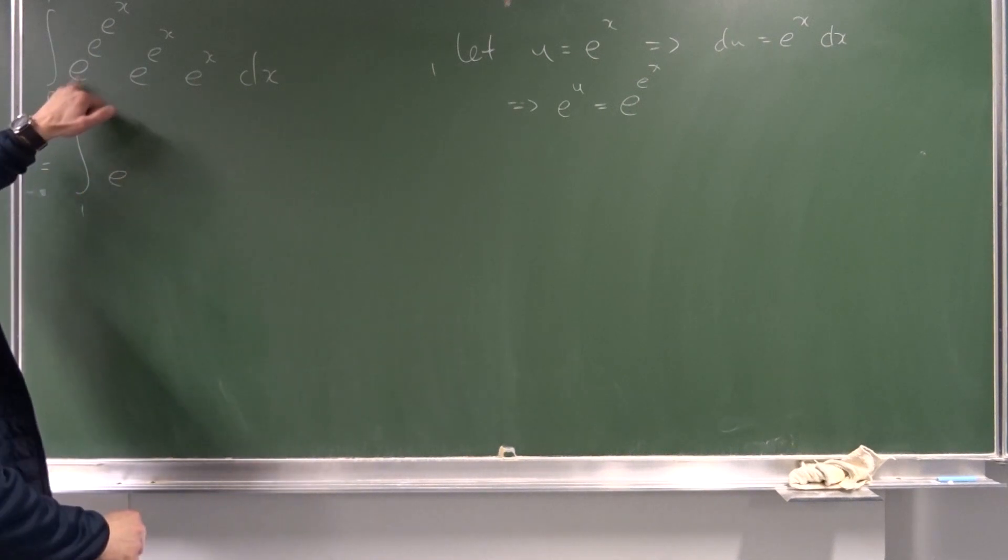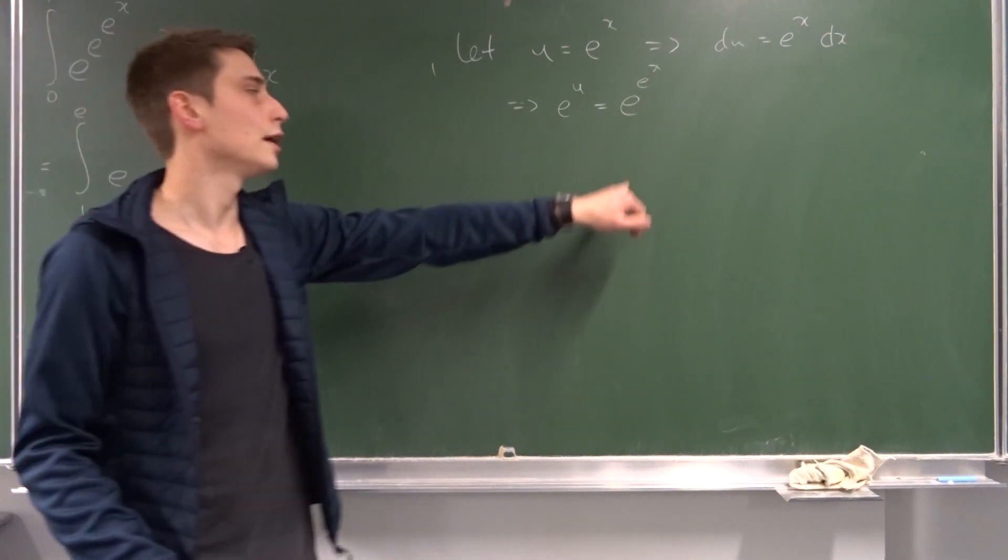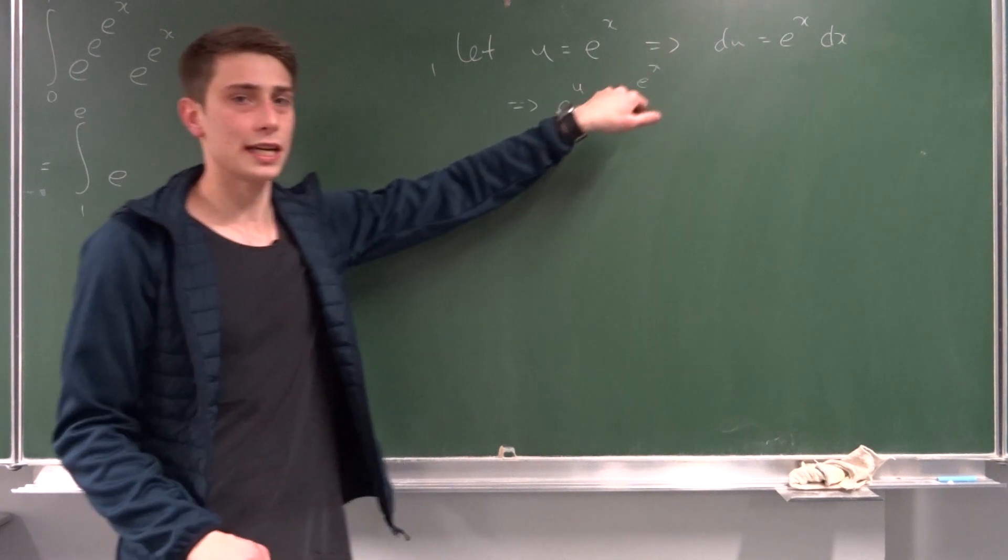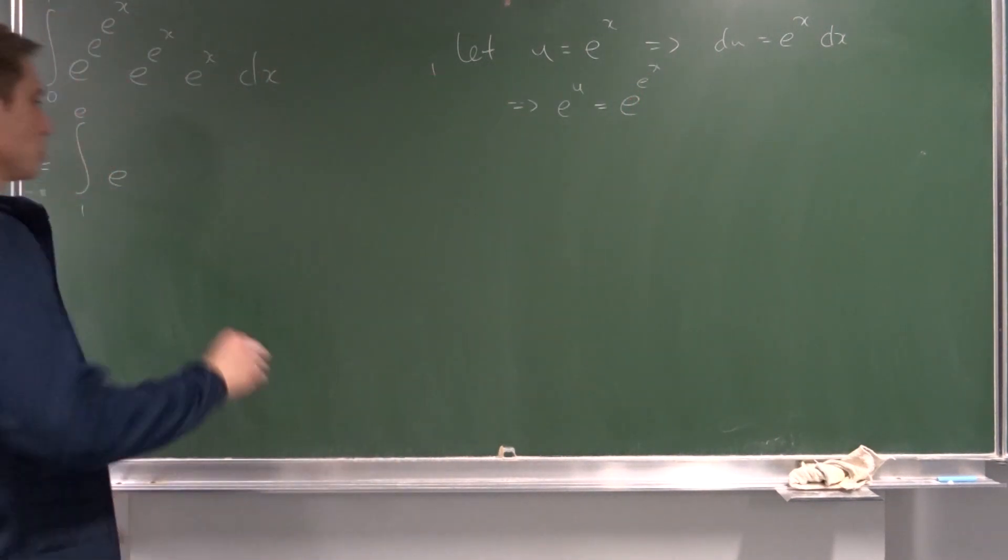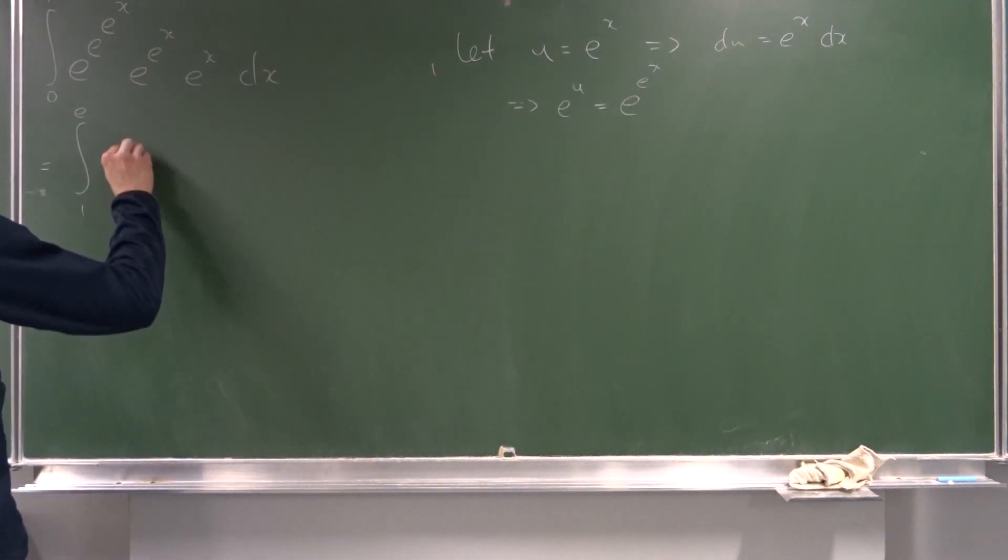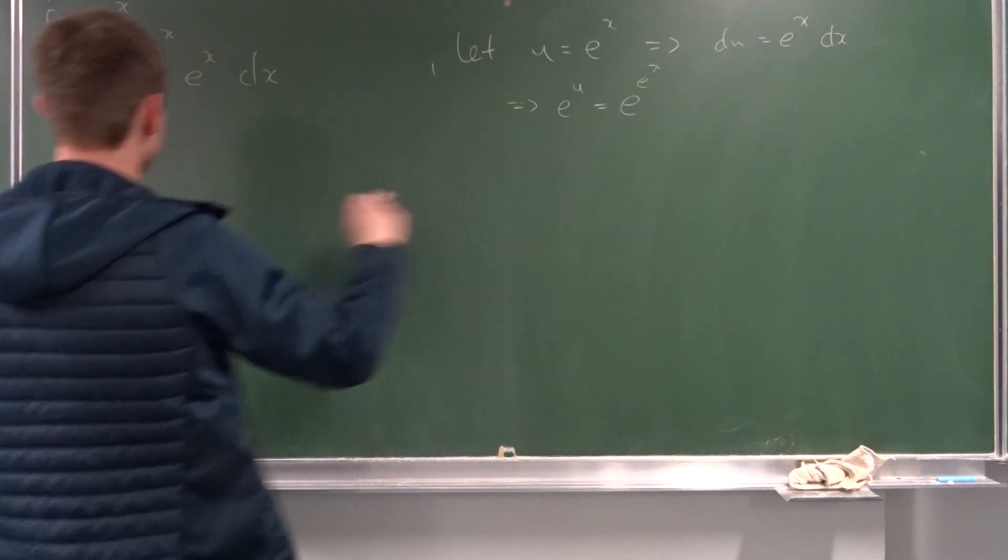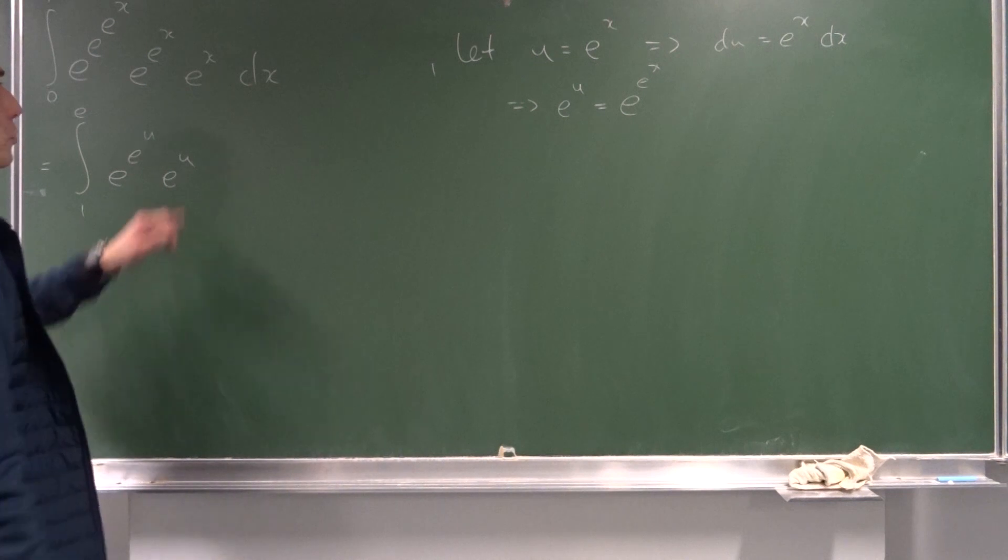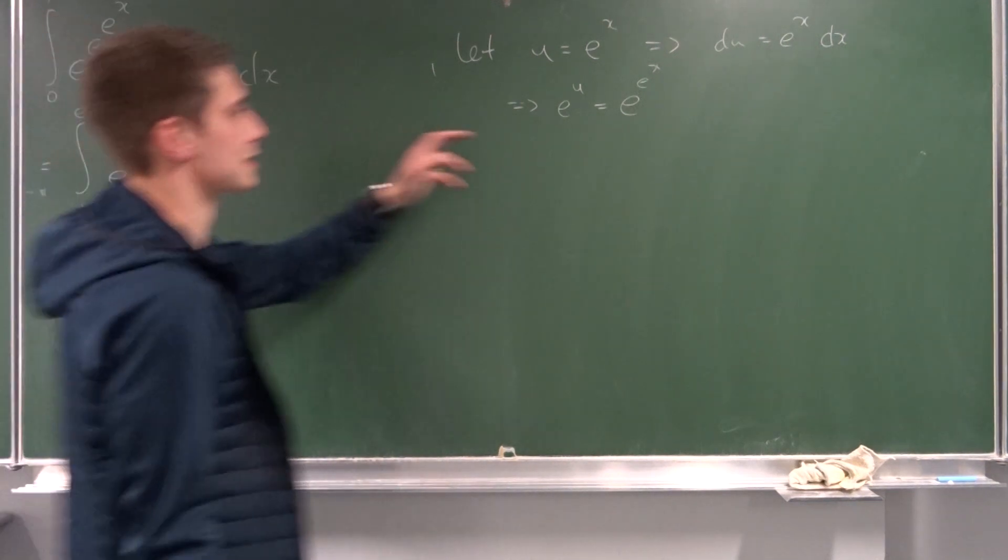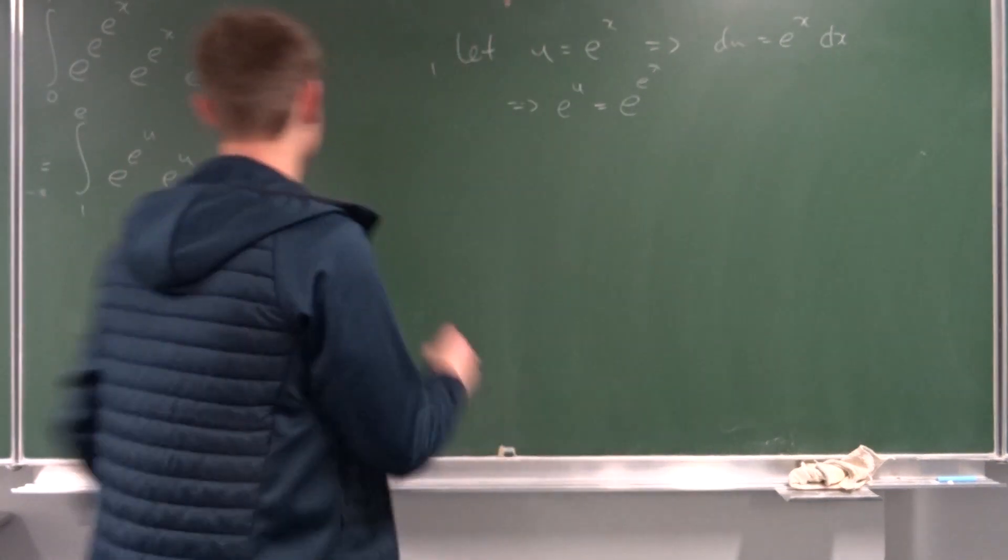And now, we can plug all the other stuff in. So, at first, we got e to the e to the e to the x power. But e to the e to the x is just e to the u. So, we can conclude that this is just e to the e to the u. So, next thing: e to the e to the x is just this right here. So, that's e to the u. And we know that e to the x times dx is just du. So, that's nice.